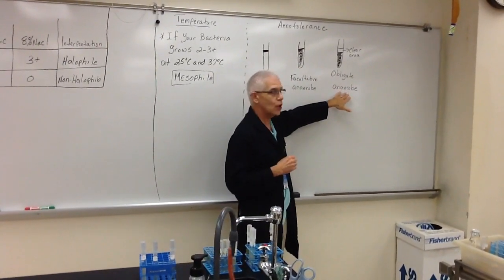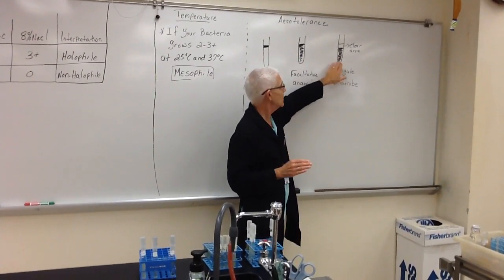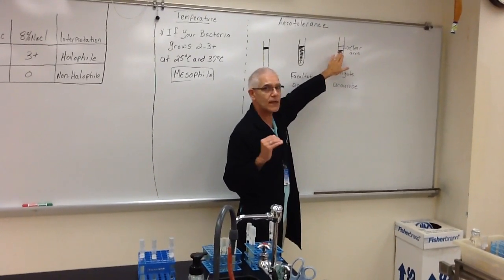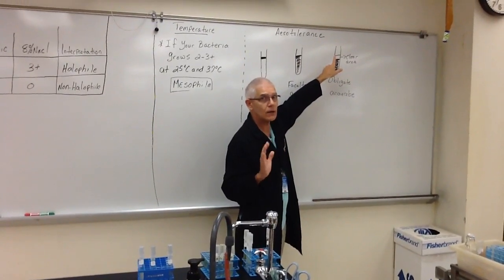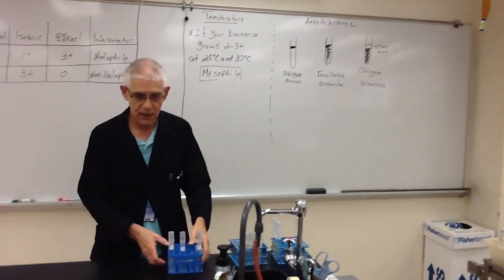Your obligate anaerobes don't have enzymes that can detoxify oxygen. So, they will start growing at the bottom of the tube, all the way up to where they sense oxygen, and they stop growing, and you're going to see a clear area. So, let's take a look at what these tubes actually look like.